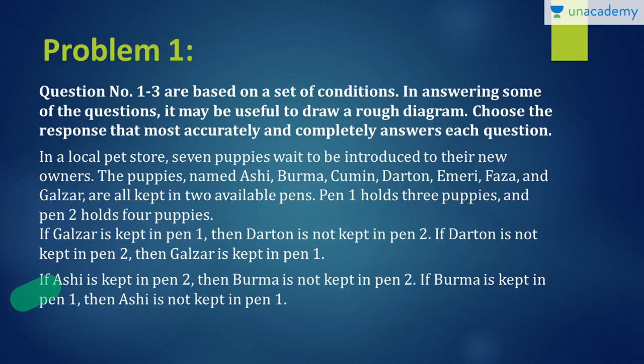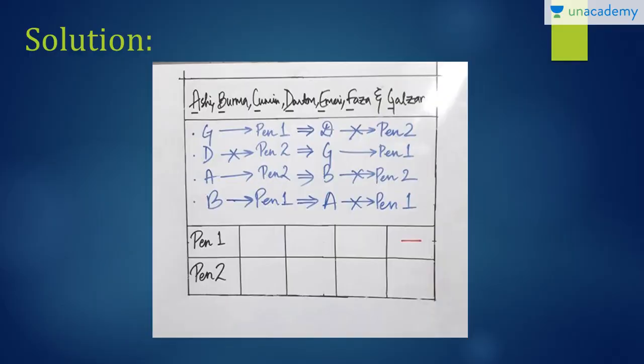Next clue. If Ashi is kept in pen 2, then Burma is not kept in pen 2. If Burma is kept in pen 1, then Ashi is not kept in pen 1. Okay, so if Ashi is in pen 2, Burma is not in pen 2. And if Burma is in pen 1, Ashi is not in pen 1 which means no matter what, Ashi and Burma can't be together. So these are the only two conditions we get and there are no more clues. So we will just proceed with the questions now.